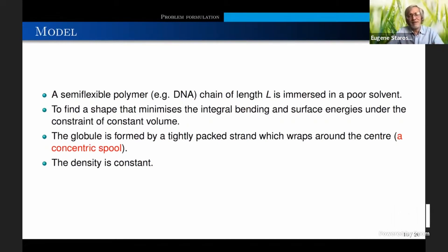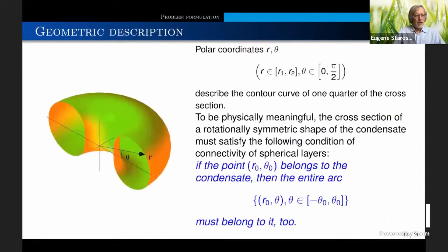And also, it is assumed, importantly, contrary to what Abing and Dyck did, I assume that there is a concentric spool. It means that the strands go around the center of the sphere. Then, the density is constant. Probably there are several papers that describe density and density is probably not constant, but in this model I have no better choice than to start with constant density.